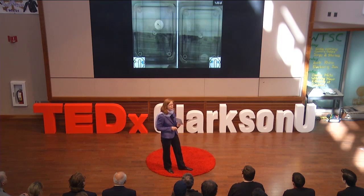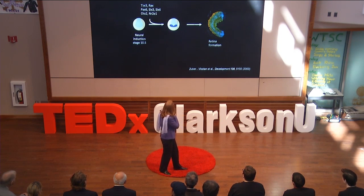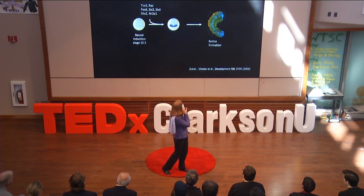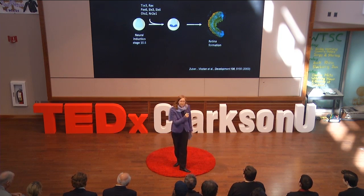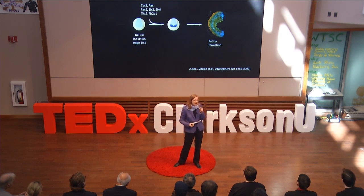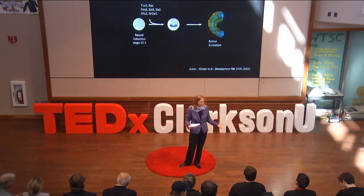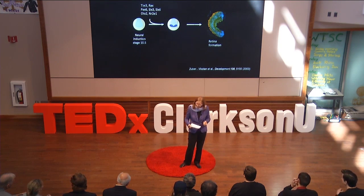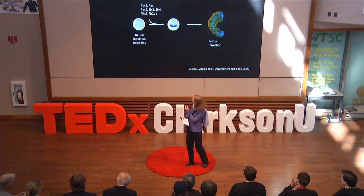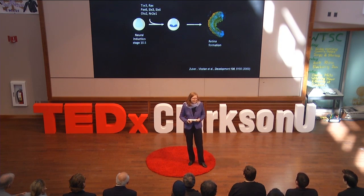So now we can generate a model for how retinal formation occurs. Simply adding these seven transcription factors was sufficient for generating retinal cells. Think about this: there are over 30,000 genes expressed in a tadpole, and you only need seven to form this beautiful neural network.